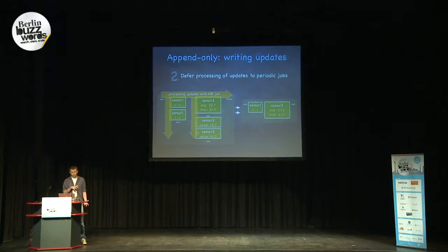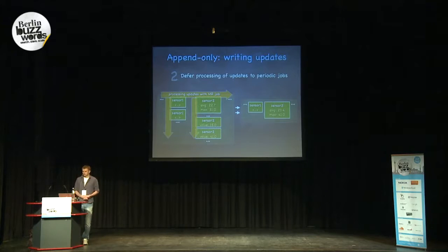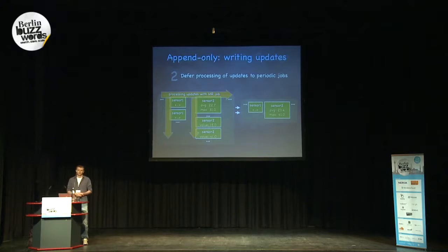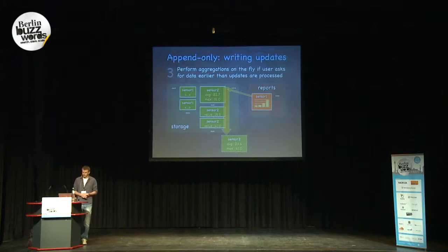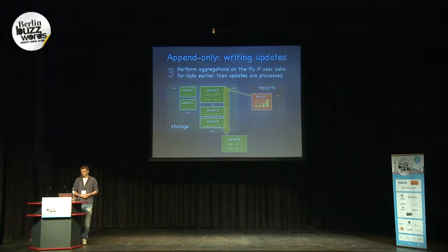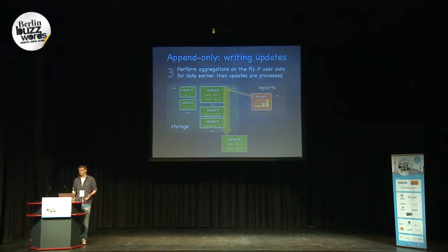Later we can merge those appended records with the help of a MapReduce job so that in the end, updated records look the same as if they were updated in a simple read-modify-write way. Importantly, multiple updates are performed at once, not individually — this is really efficient if you want to update some complex structures which you need to load into memory. And finally, we may need to merge records on the fly so that the most recent changes are visible to users even if the periodic job hasn't run yet. We could also store the merge result back to HBase so that we don't process the same data again.